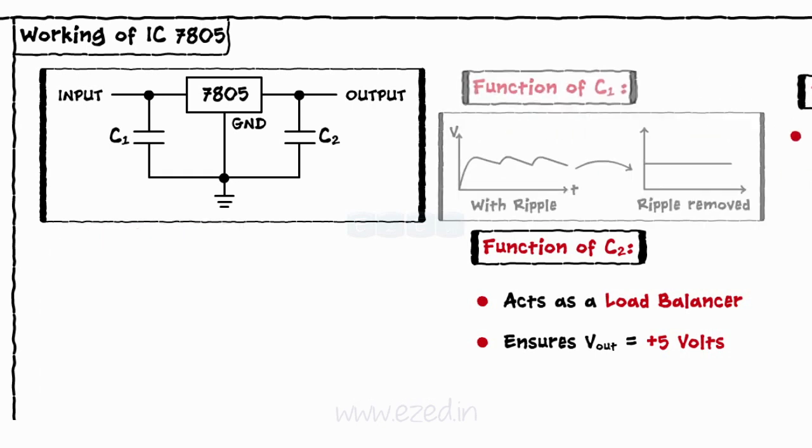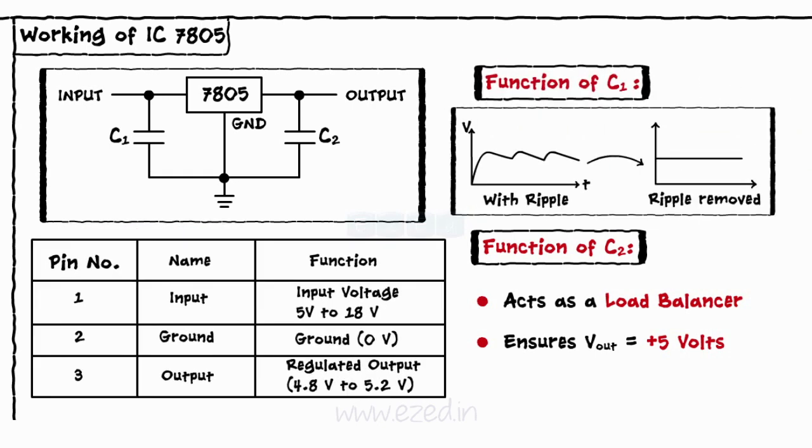The specifications of IC7805 are as follows with an input voltage of 5 volts to 18 volts and an output voltage of 4.8 volts to 5.2 volts. Thus, it supplies a constant output of around 5 volts even if the input varies from 5 volts to 18 volts.